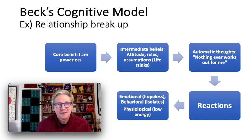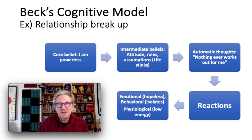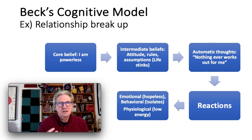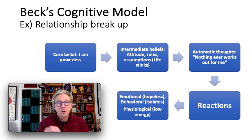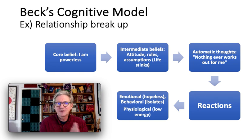Welcome, I'm Russ Curtis. I want to talk about Beck's Cognitive Model, and I want to thank the students who helped with this diagram and flowchart. With Beck's Cognitive Model, we're looking at an example of a relationship breakup — a client who recently had a breakup and is obviously upset. According to Beck's model, this person has a core belief. We don't know exactly what it is, but 'I'm unlovable' or 'I'm powerless' are common ones. This core belief is likely beyond the person's awareness at this time.